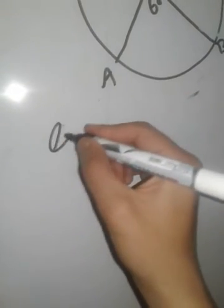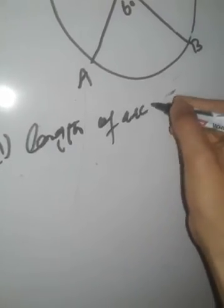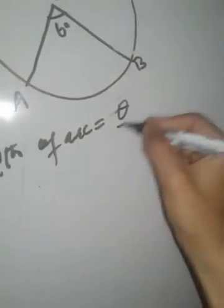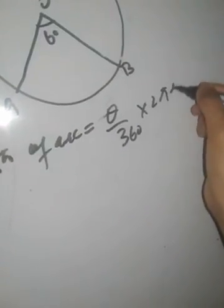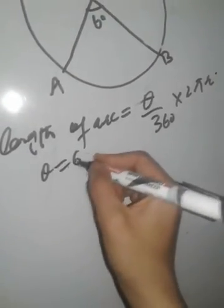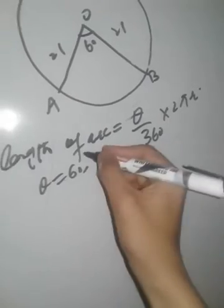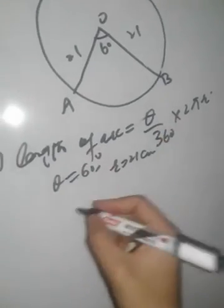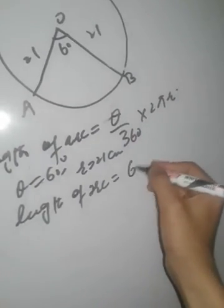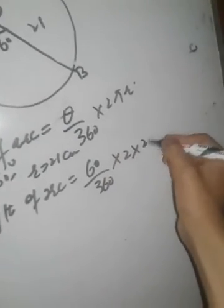Part one: find the length of arc. The formula for length of arc is theta divided by 360, into 2πr. Here theta equals 60 degrees and r equals 21 centimeters. So let us substitute these values. Therefore, length of arc equals 60 divided by 360, into 2, into π which is 22/7, into r which is 21.